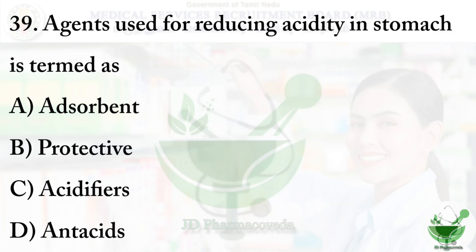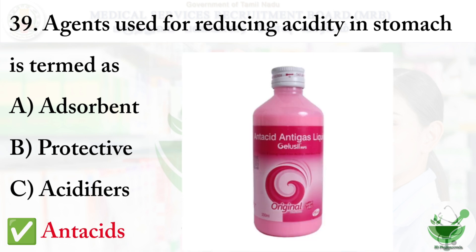Question number 39: Agents used for reducing acidity in the stomach — the options are: option A adsorbent, option B protective, option C acidifier, and option D antacid. The correct option is option D, antacid. Antacids are substances which neutralize stomach acidity to relieve heartburn, indigestion, or upset stomach. Antacids contain substances with a near-basic pH, which can neutralize the acidic pH. Marketed products contain aluminium, calcium, and magnesium salts.